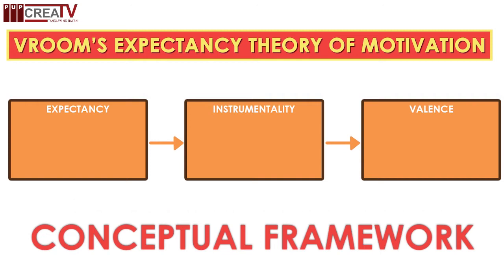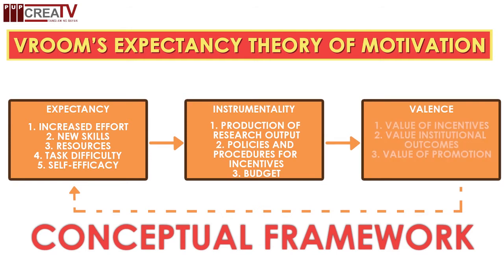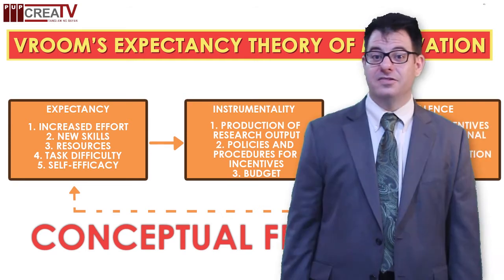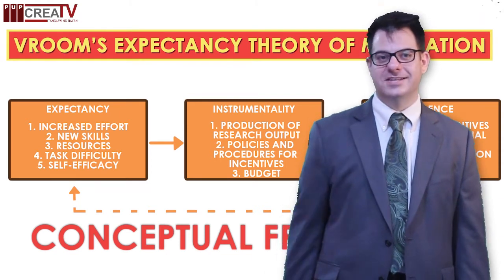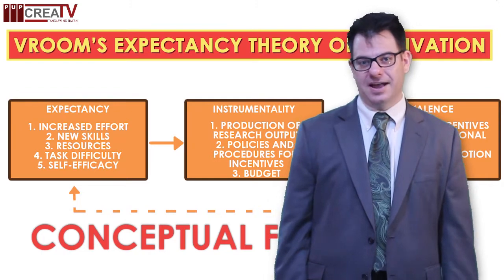This is just a diagram of the theory. As you move forward to the conceptual framework, you'll see we have the exact same thing — three boxes that are closely related: expectancy, instrumentality, and valence. In the conceptual framework, the actual variables and ideas about each of those are plugged in. This will help you focus your research for the individual situation. The theory, of course, informs the conceptual framework. They're the same shape, each having three items.